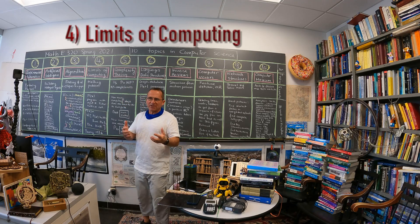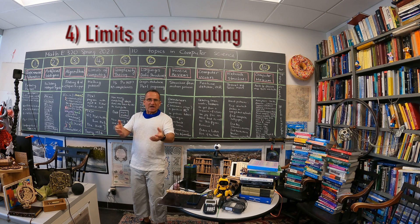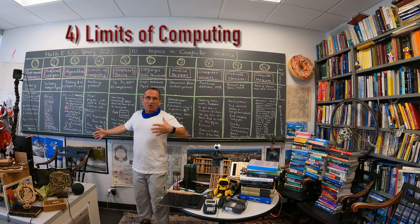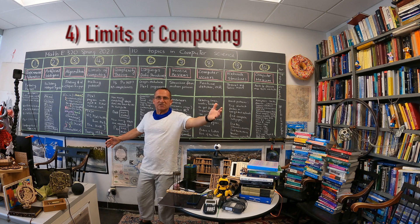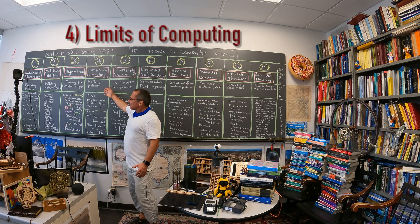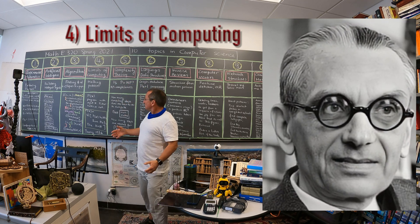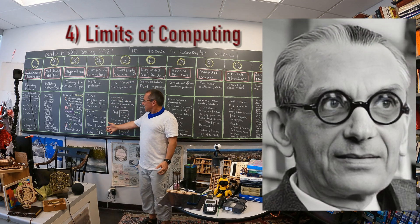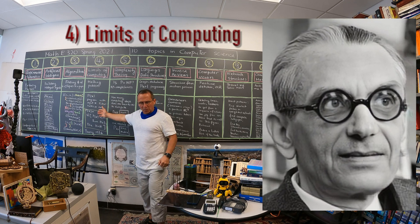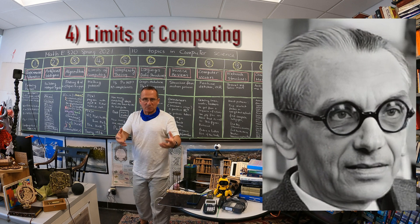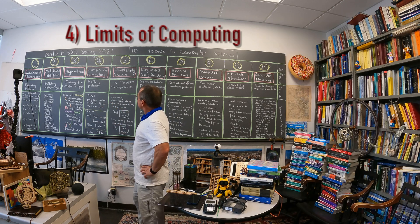A machine is a procedure which takes an input and gives an output. A particular machine either halts or not — it produces an output or it just runs forever. This is about the limit of computing, which is very much related to logic and Gödel's incompleteness. An easy version of Gödel's incompleteness theorem is really also given in that decision problem.